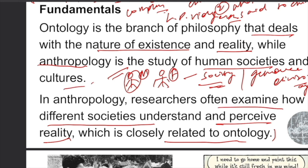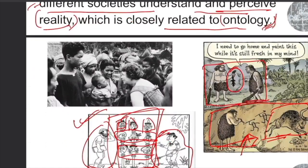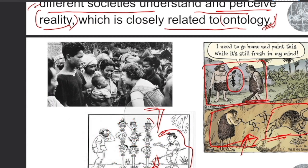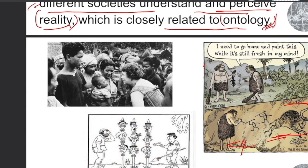Now we will observe some key fundamental points from ontology. It is a branch of philosophy that deals with the nature of existence and reality, while anthropology deals with human societies and cultures. In anthropology, researchers often examine how different societies understand and perceive reality — the concept of reality — which is closely related to ontology.